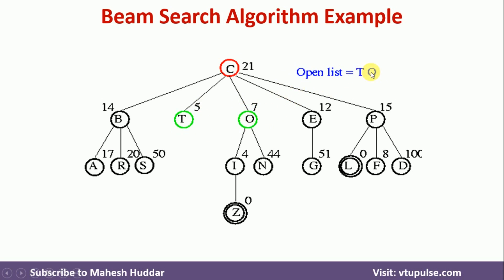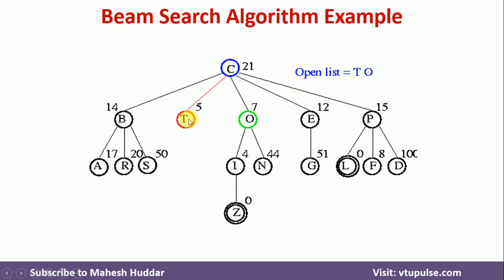Now between these two, T and O, which are present on the open list, T is having the minimum estimated distance, so we will examine this particular T. But we don't have any successors for this particular T, so we will remove it from open list directly here.